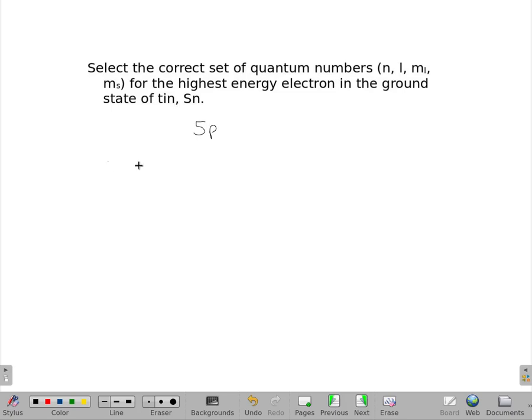That's going to tell us our n is 5 and our l is 1. But the m sub l and the m sub s are variable. There's not a fixed value; we can't tell our p orbitals apart.